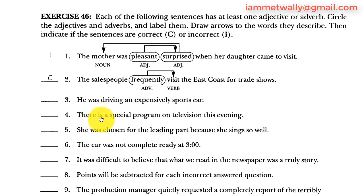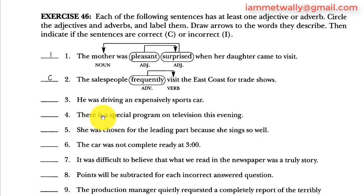Number four: 'There is a special program on television this evening.' There is the subject and verb. Special is an adjective describing the noun program. That's it — it's correct.